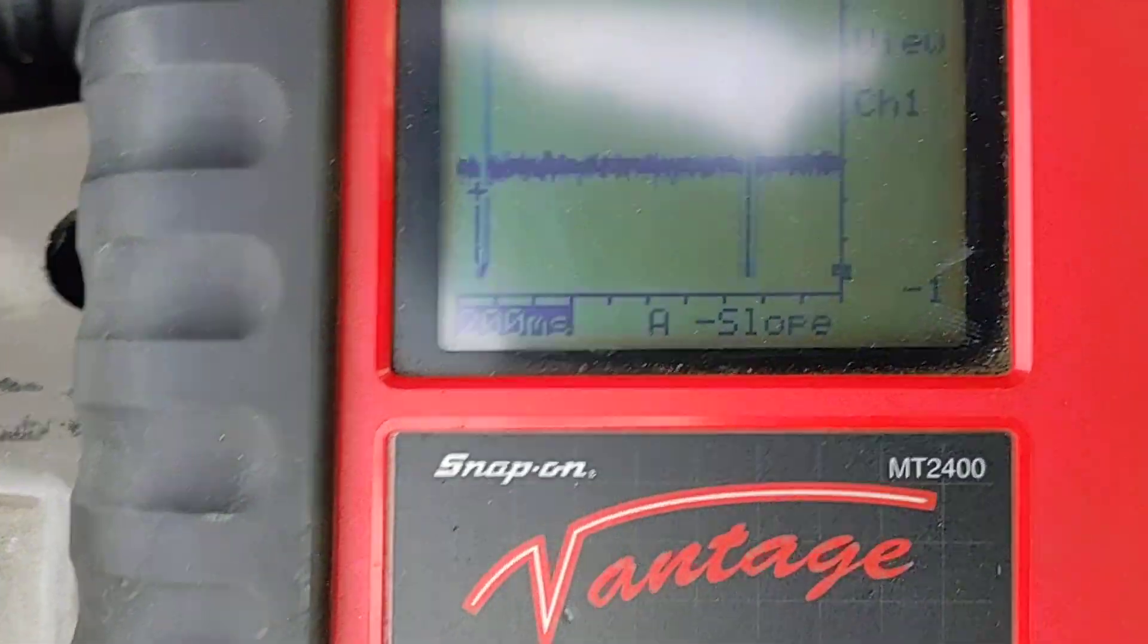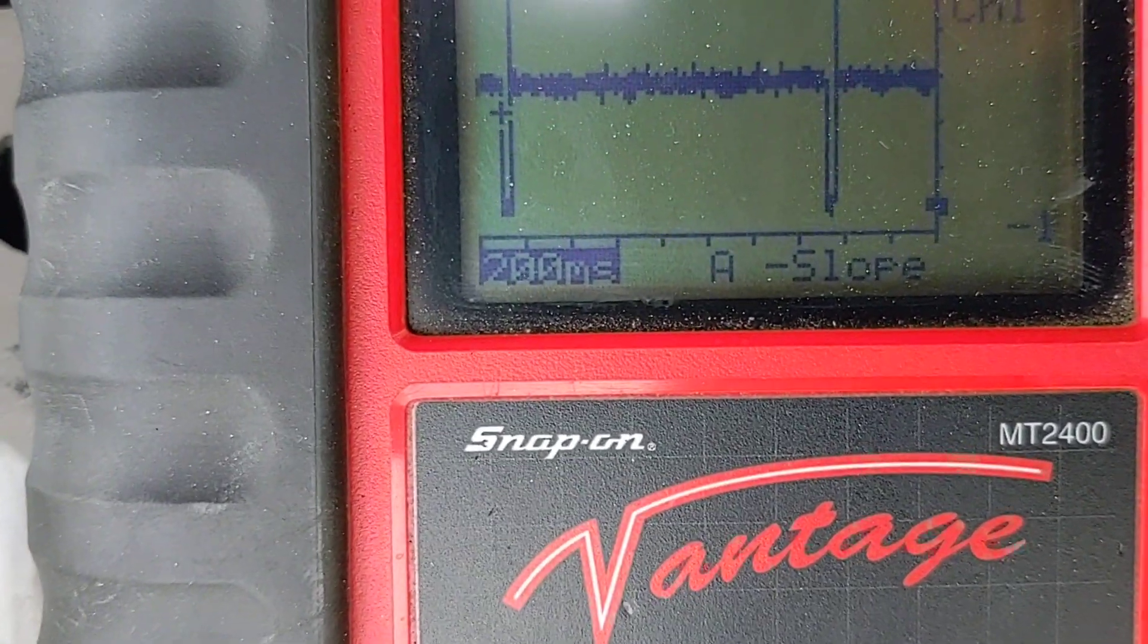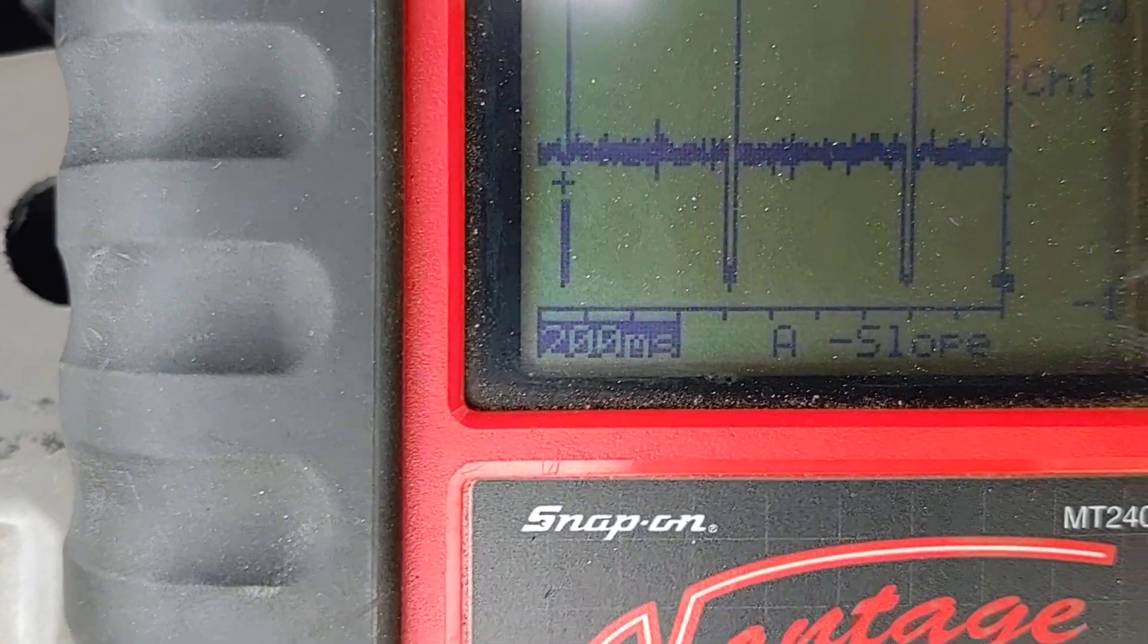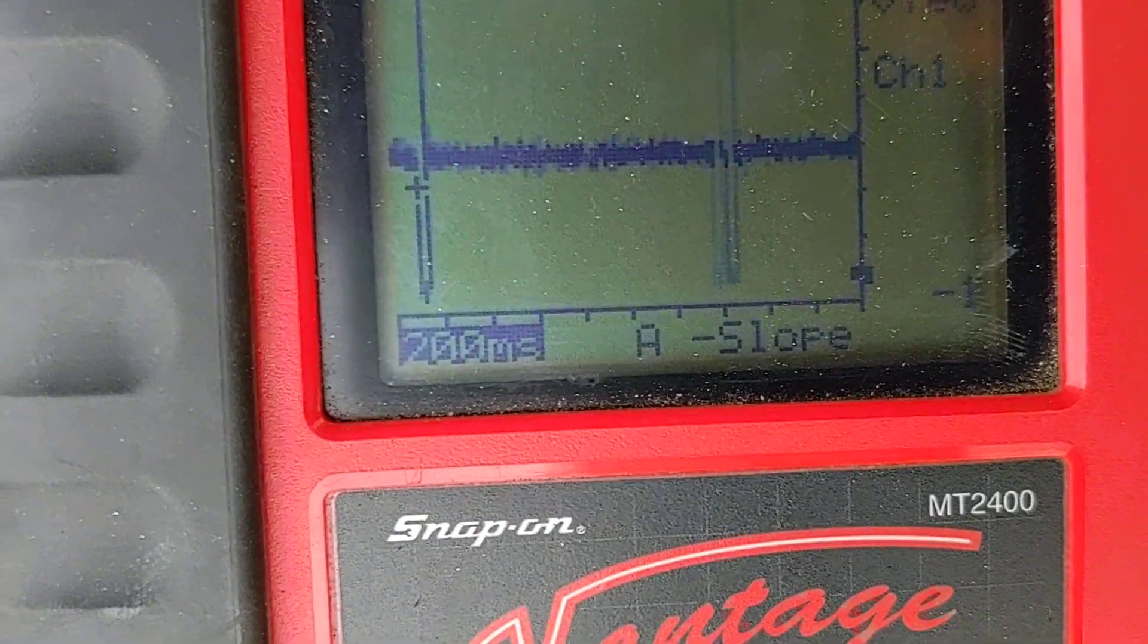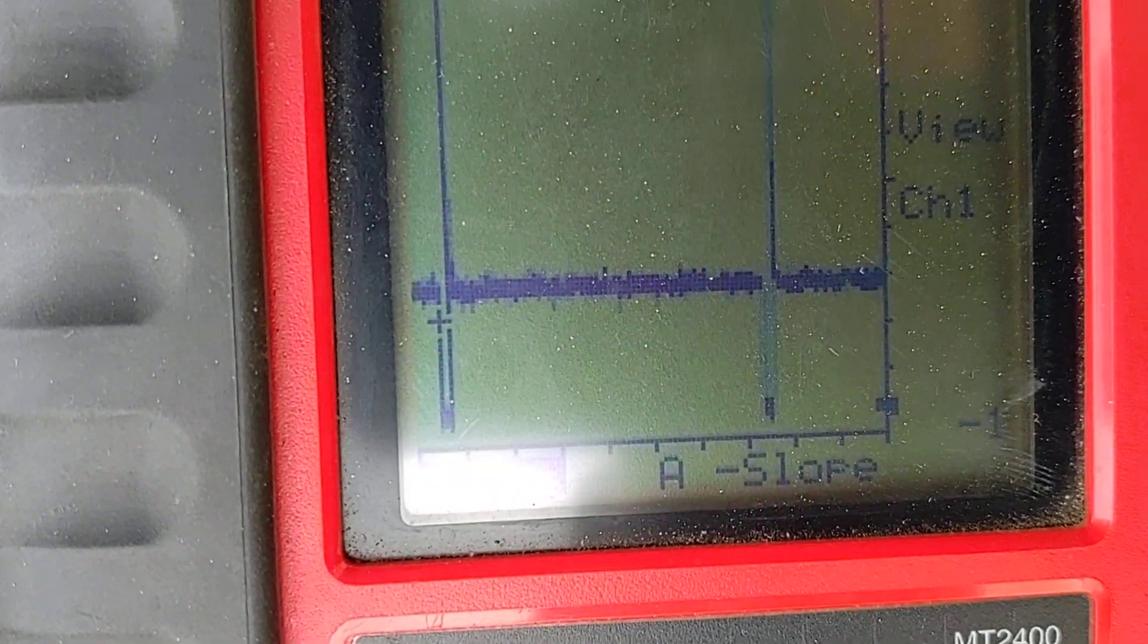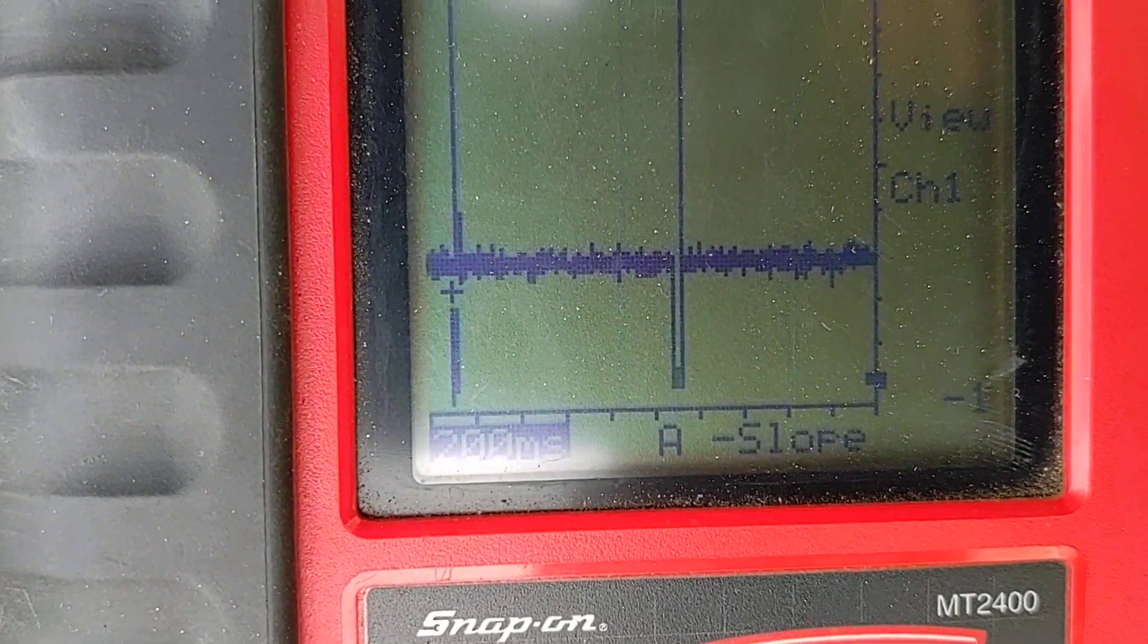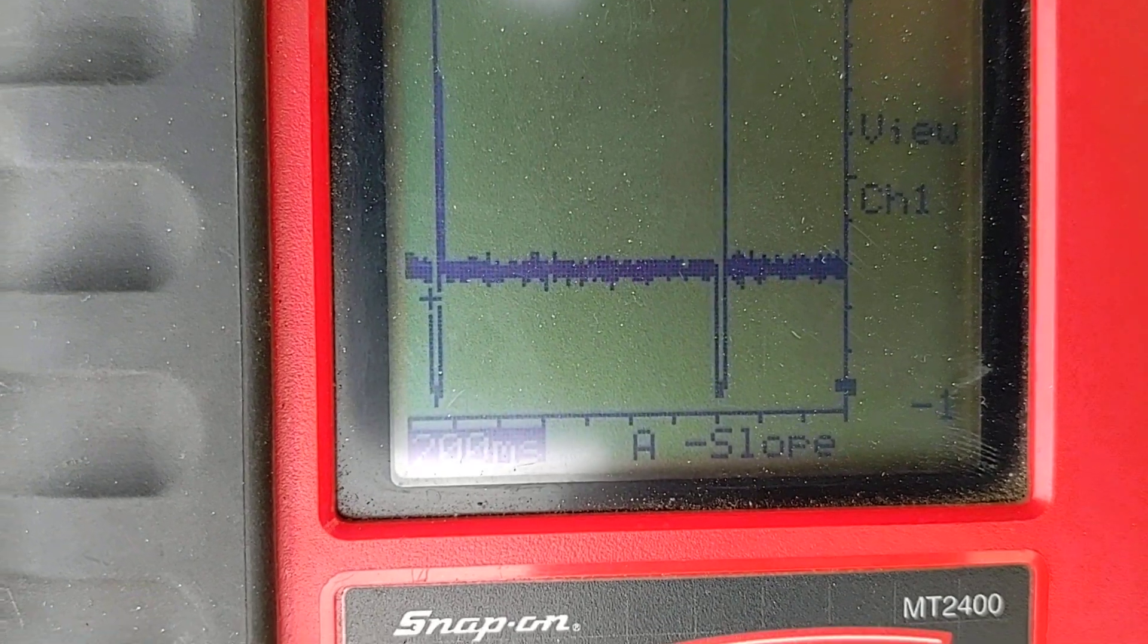So the reason they're becoming closer together is they're firing more frequently. Basically the frequency is increasing. Now if I hit the throttle kind of aggressively, you'll notice not only did they get closer together, but the pulse width got wider. The on-time got wider.